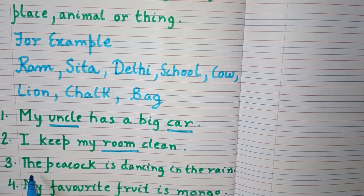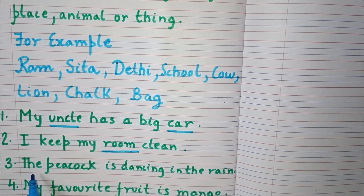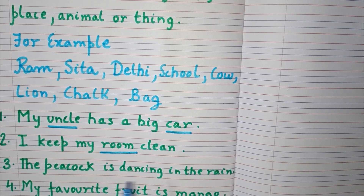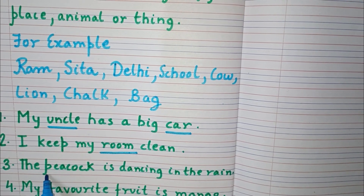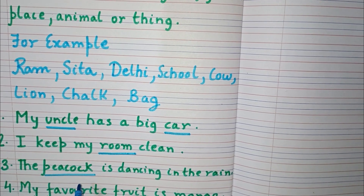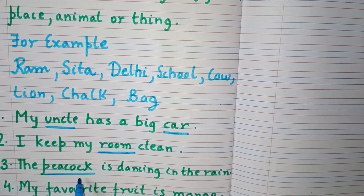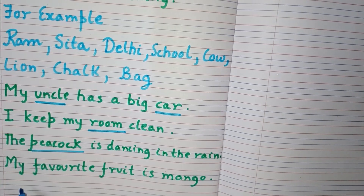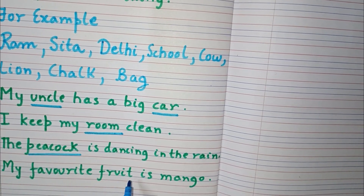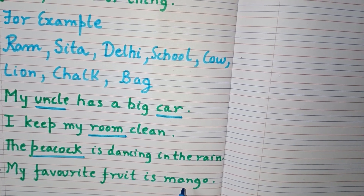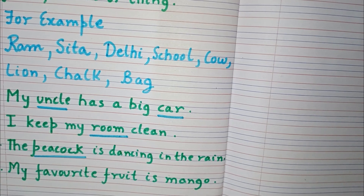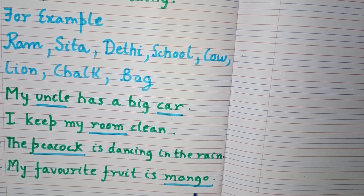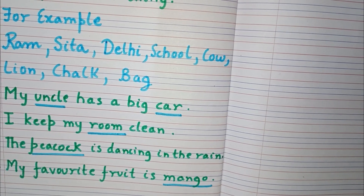Next: the peacock is dancing in the rain. Here, peacock is a noun because it is the name of an animal. Next: my favorite fruit is mango. Here, mango is a noun because it is the name of a thing.